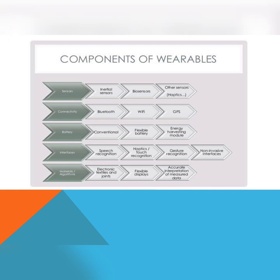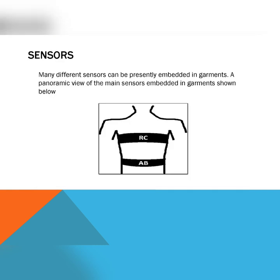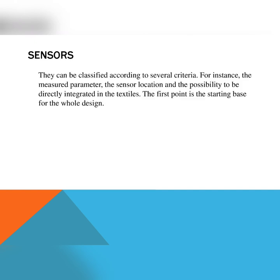Now let me discuss about sensors in detail. There are many sensors present in the market. These are the sensors which are embedded in the garment, as shown in the figure. They can be classified according to several criteria — for instance, the measured parameter, sensor location, and the possibility to be directly integrated in textiles.